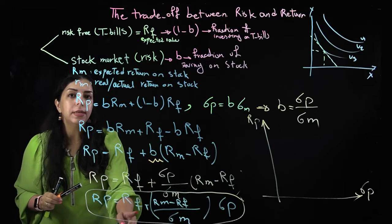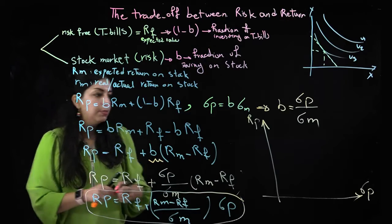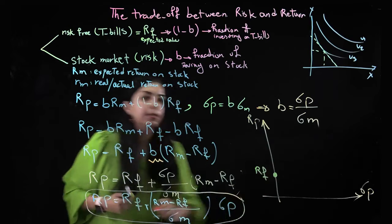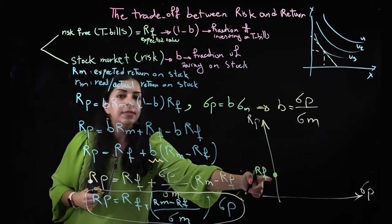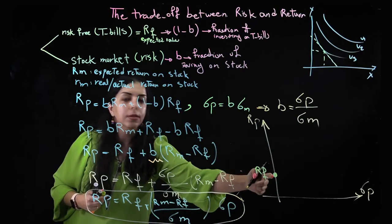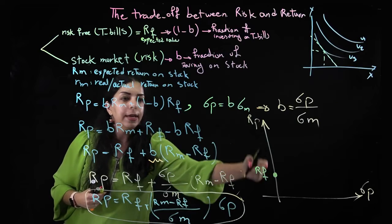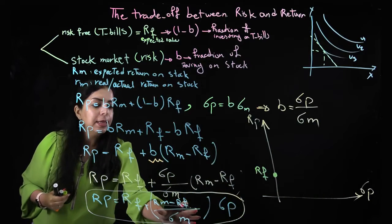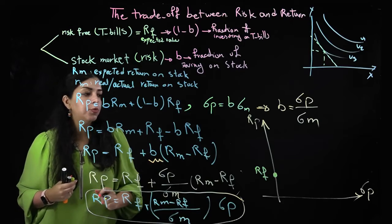This part, which is the return on risk-free asset, is my intercept. So the intercept is here. Do I have any risk here? Of course not. You can see this on the y-axis. On the y-axis, the amount of risk is zero. And then here is the risk of the portfolio.